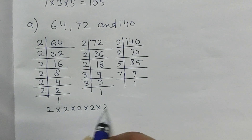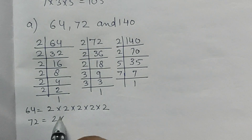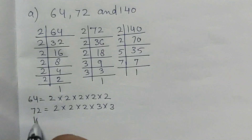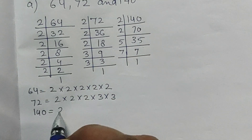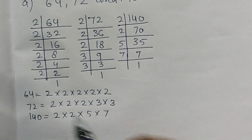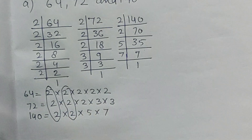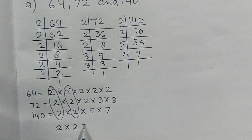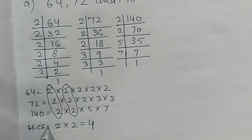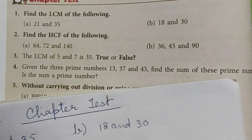So 64 = 2 × 2 × 2 × 2 × 2 × 2, and 72 = 2 × 2 × 2 × 3 × 3, and 140 = 2 × 2 × 5 × 7. The common factors are 2 and 2, so the HCF is 2 × 2 = 4.